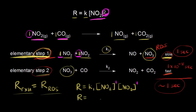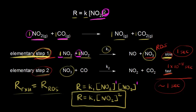We can simplify further: the rate of the rate determining step equals K1 times [NO2] squared, since [NO2] to the first times [NO2] to the first equals [NO2] squared. This rate law has the same form as the experimental rate law, so our mechanism is consistent with the experimental rate law for the overall reaction.